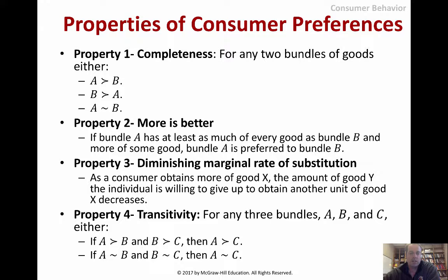Here is more microeconomics than we really need to proceed, but just some logical things. If A is preferred to B, and B could also be preferred to A, then the two must be equivalent. Property two: more is better. These are basically saying, in a nutshell, consumers are rational.